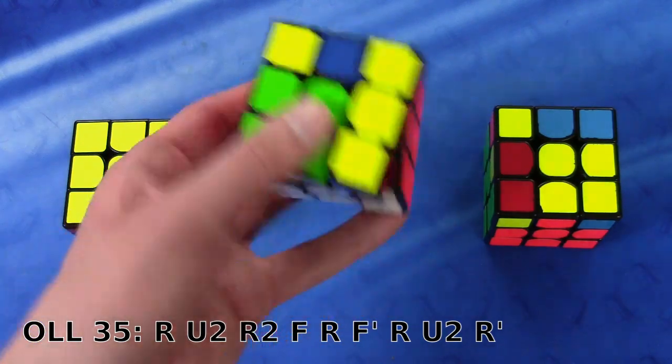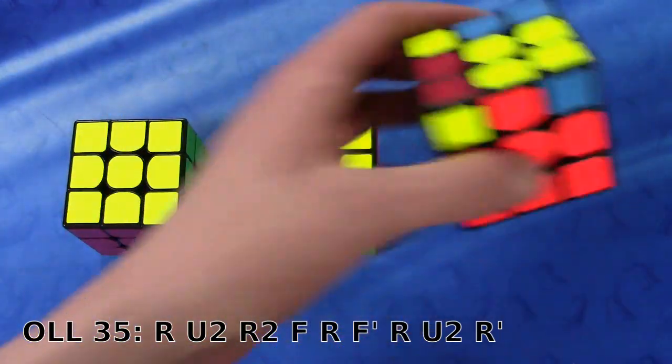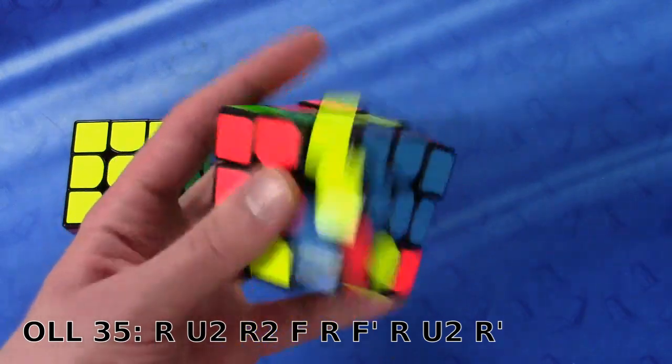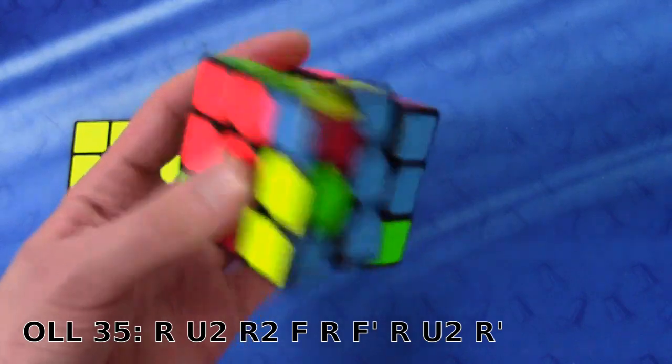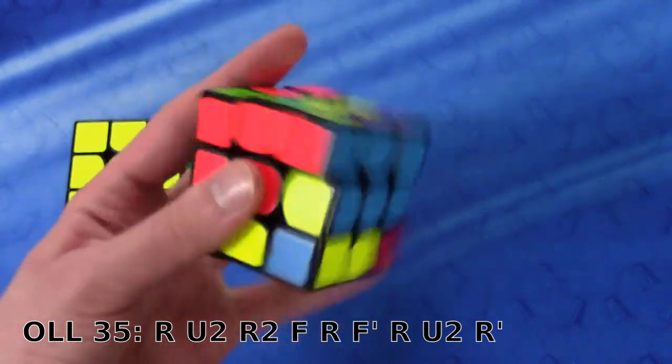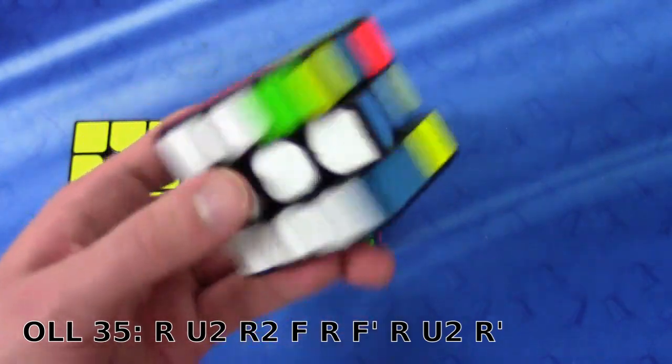And I'm gonna use it to do the F prime, and now I'm gonna just do R with my pinky here, and then two U prime flicks, and then R prime.